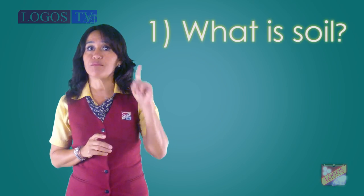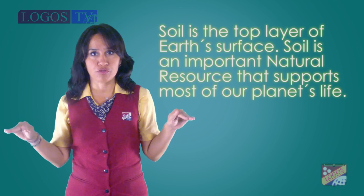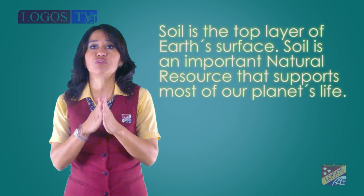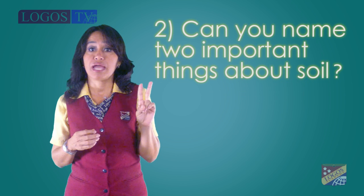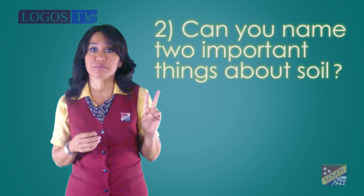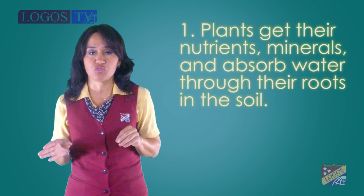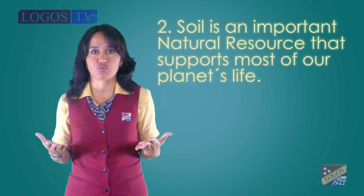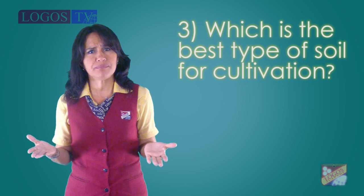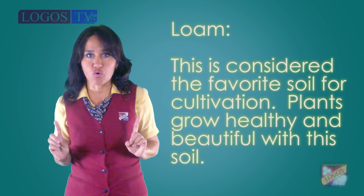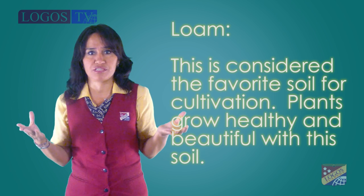Let's see how much you learned today with some questions. Number one: what is soil? Soil is the top layer of earth's surface and an important natural resource that supports most of our planet's life. Two: can you name two important things about soil? Plants get their nutrients, minerals, and absorb water through the roots in the soil; soil supports most of our planet's life. Three: which is the best type of soil for cultivation? Loam — it is considered the favorite soil for cultivation, and plants grow healthy and beautiful with it.